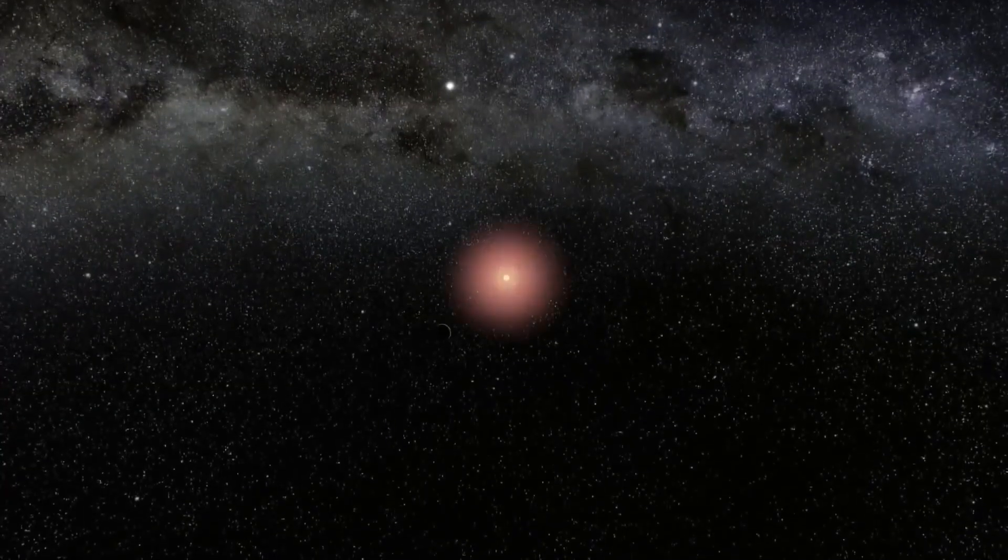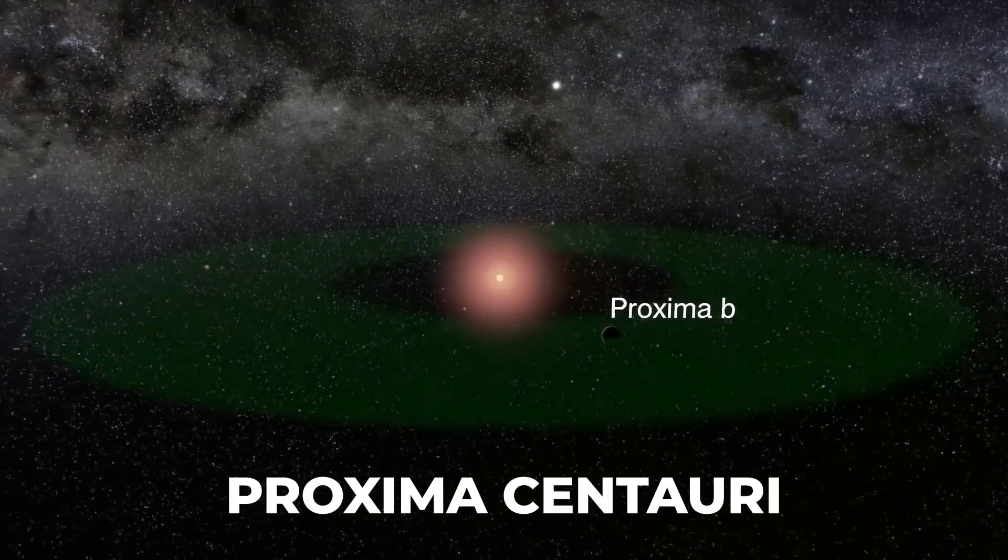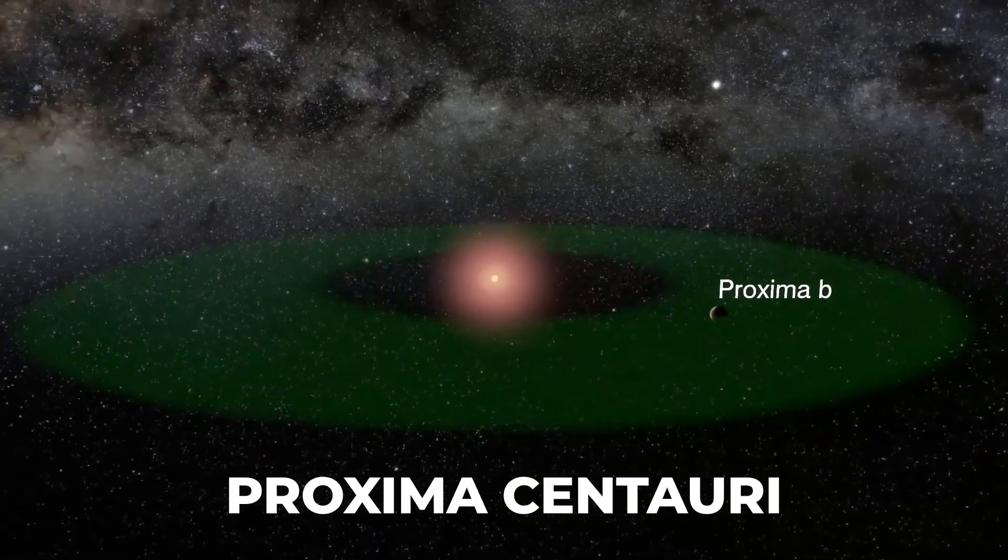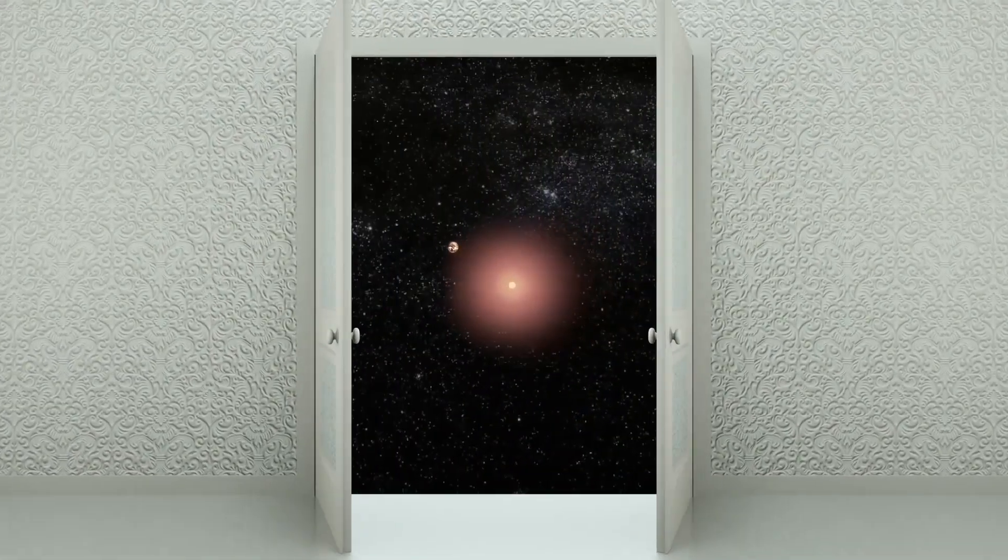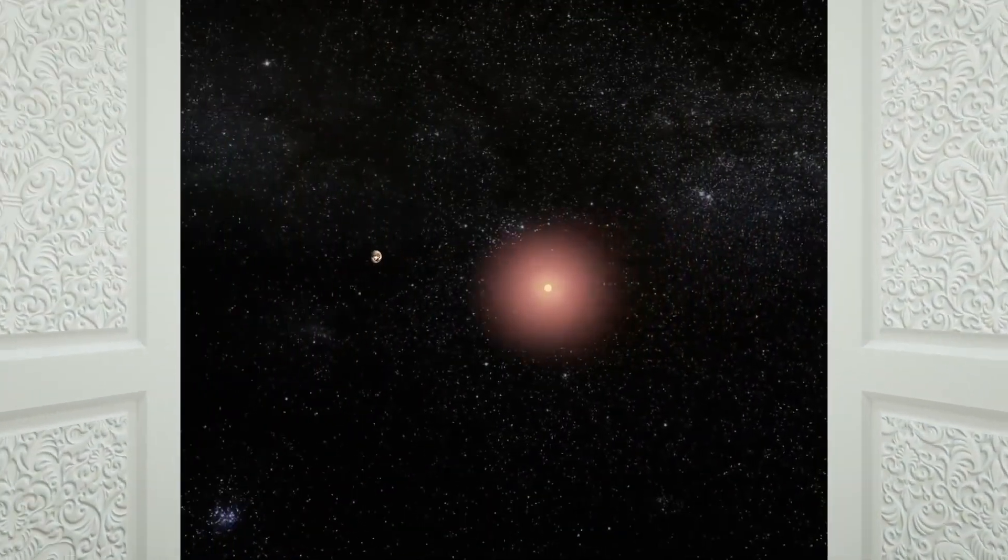For your information, Proxima Centauri, the closest star to our Sun, is just four light years away from us, which in interstellar terms is practically on our doorstep. The planet Proxima b, discovered in 2016, is 1.27 times the size of Earth.